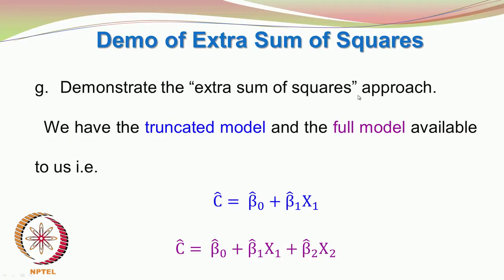The next step is to demonstrate the extra sum of squares approach. We have the truncated model in blue and the full model. The truncated model is β̂₀ + β̂₁x₁, and the full model as of now involves only the main variables x₁ and x₂: C-hat = β̂₀ + β̂₁x₁ + β̂₂x₂. We could add second-order interaction terms, third-order terms, quadratic terms, etc., but for now we stick with only main effects to demonstrate the principle.